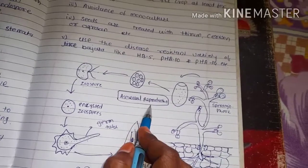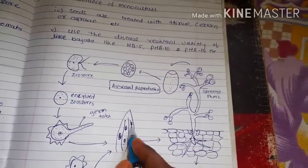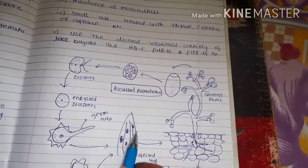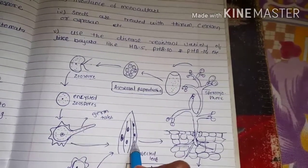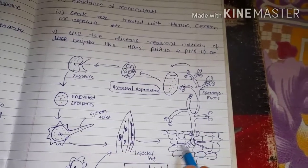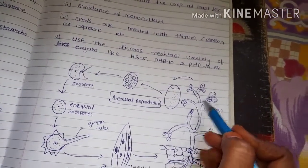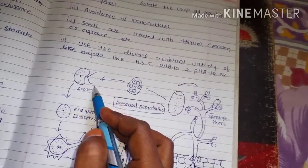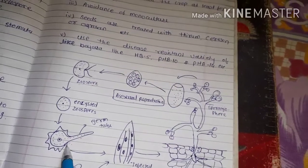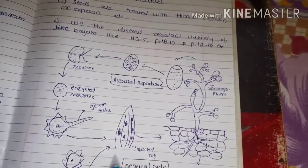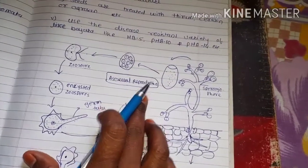To repeat the asexual cycle: the fungal spore enters through the leaf stomata, first showing whitish color patches on the leaf surface that later turn brown. Mycelium enters and forms sporangiophores, which form sporangia. The sporangia form zoospores, which are biflagellated. The zoospores develop a germ tube, and with the help of this germ tube the zoospore again infects another new plant of Bajra.